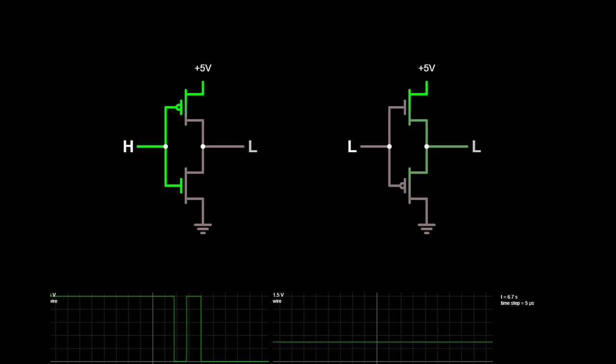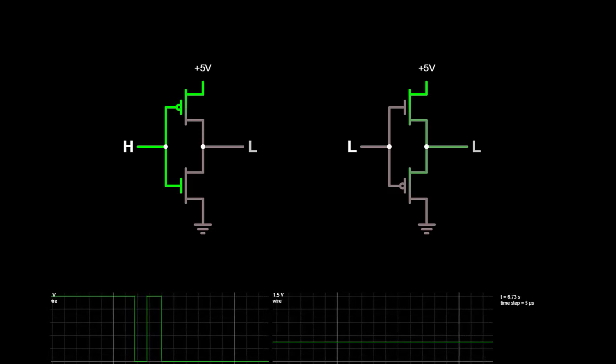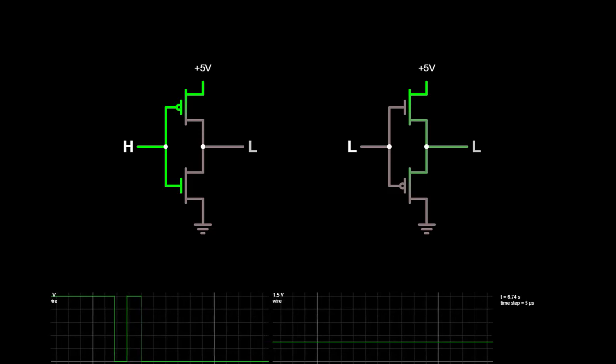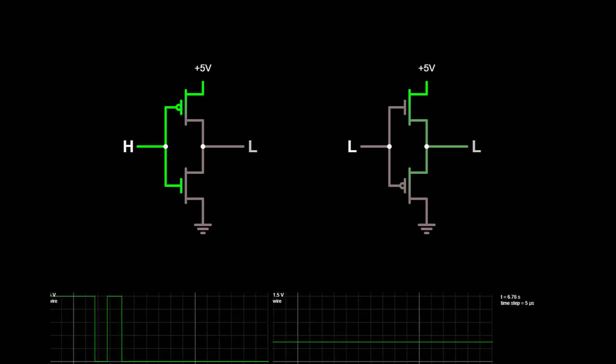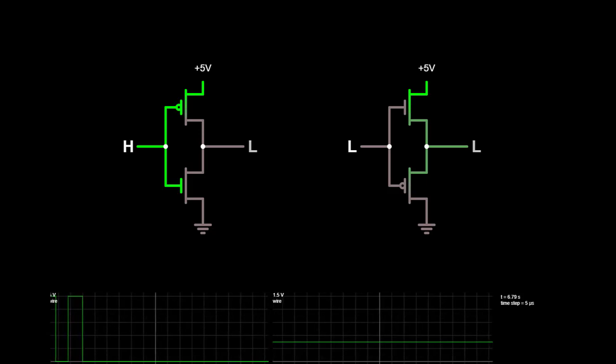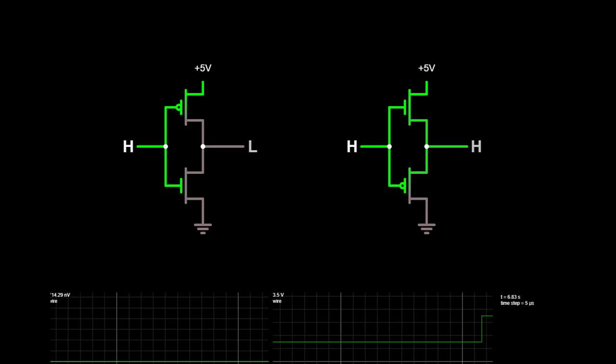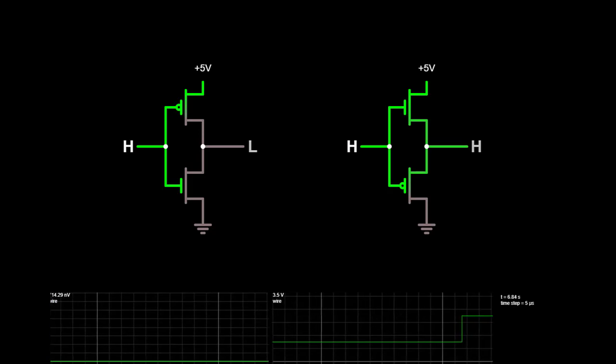The circuit on the right is kind of a backwards inverter with a PMOS device in the pull-down network and an NMOS device in the pull-up network. When the input is low, the PMOS device is turned on and the output is low, and when the input is high, the NMOS device turns on and the output is high.